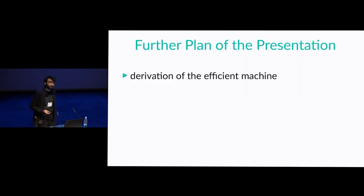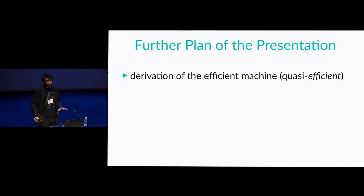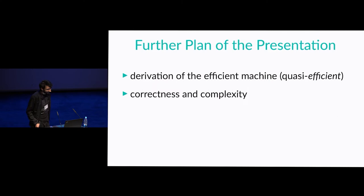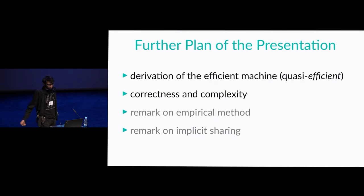The plan of this presentation will be to show how to derive an efficient machine for strong call-by-need — technically quasi-efficient because it is quasi-linear in size of the initial term, but in common meaning still efficient. Then we will talk about correctness of this machine, how we can say that it is strong call-by-need, and its complexity analysis. Finally, I would like to remark on two interesting aspects of our work: an empirical approach and implicit sharing employed in our analysis.